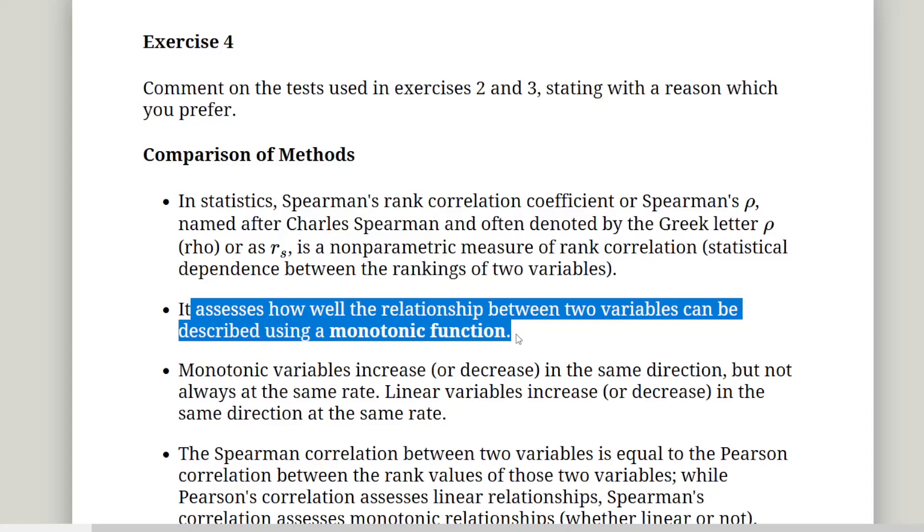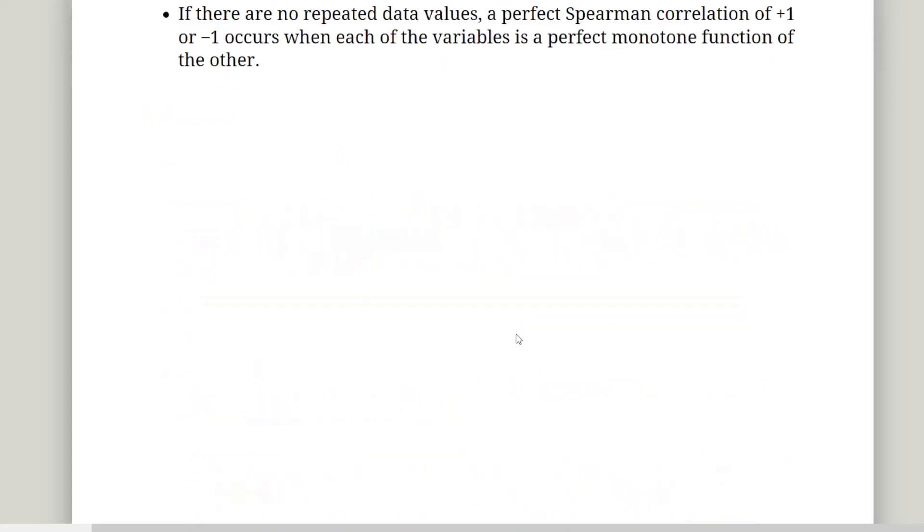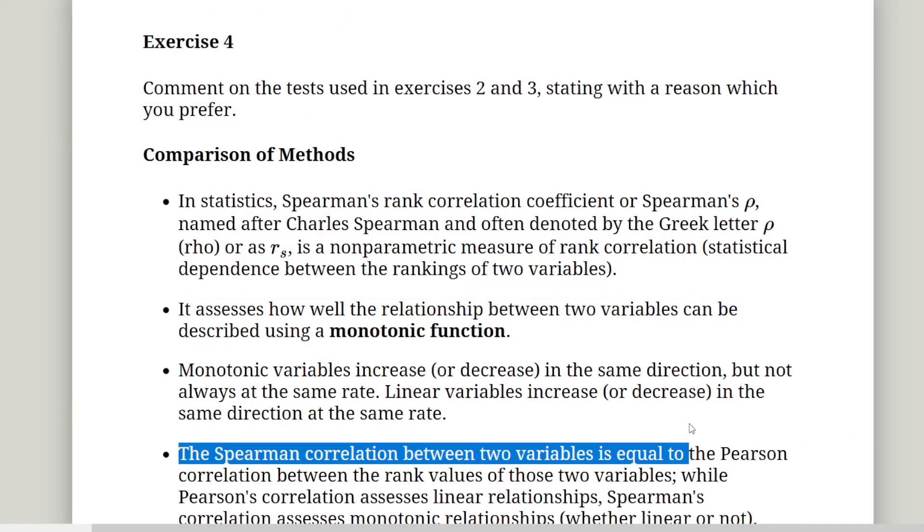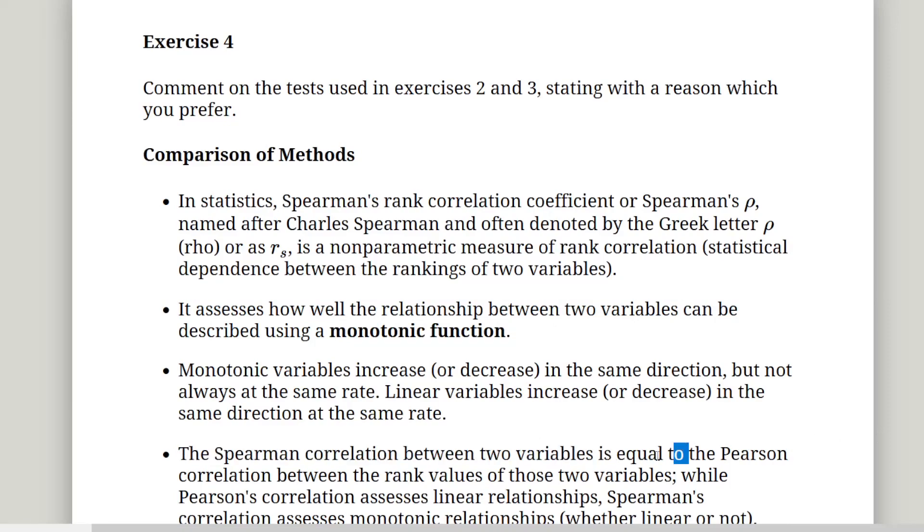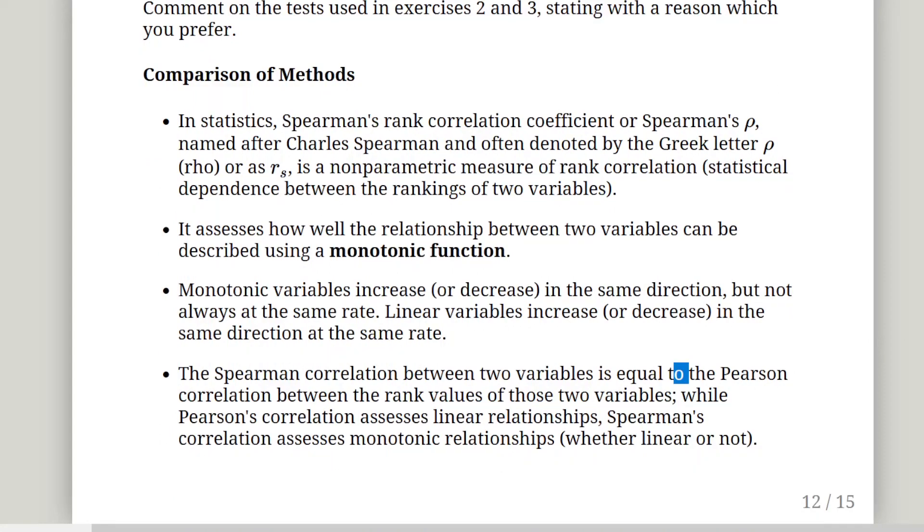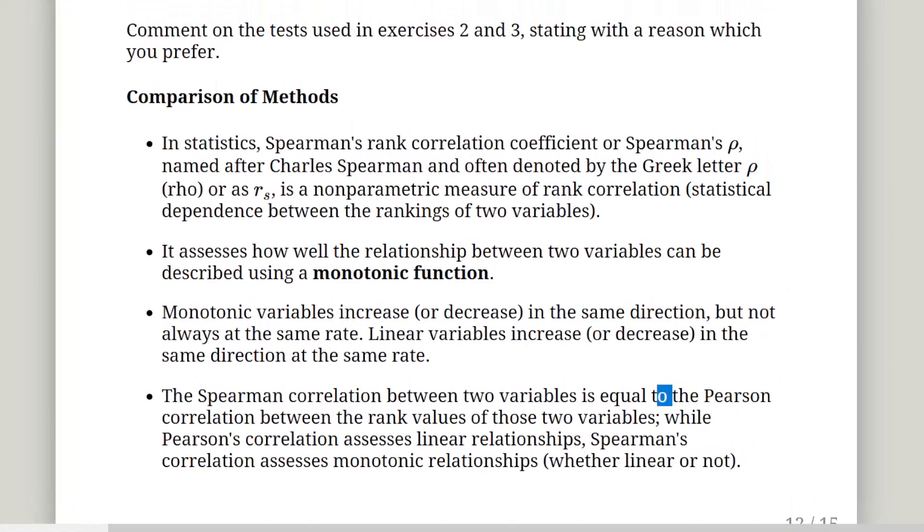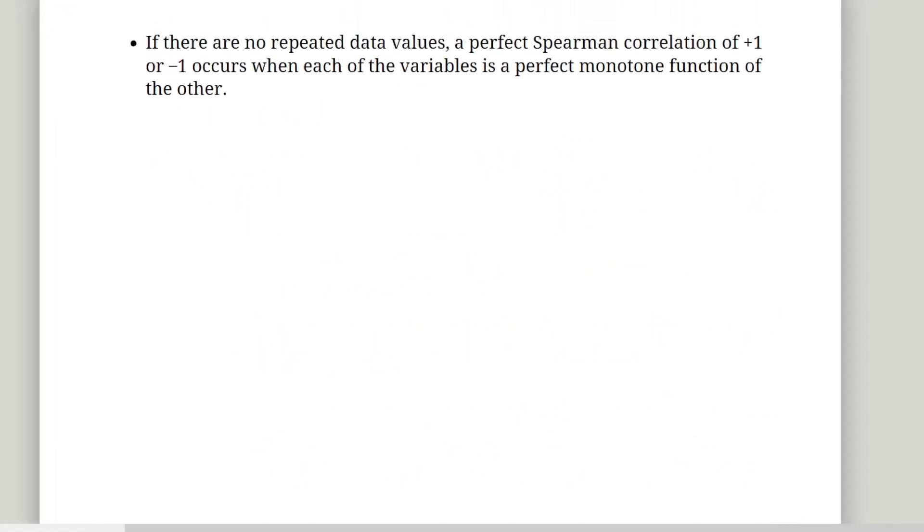That actually would be a better description of a curvilinear relationship. So monotonic variables increase or decrease in the same direction, but not always at the same rate. So it could allow curvilinear relationships. Linear relationships increase or decrease in the same direction at the same rate. So they should appear linear. Now, a linear relationship can be monotonic, but a monotonic relationship doesn't mean it's linear. So essentially, the thing is that the Pearson correlation coefficient is for linear relationships, whereas the Spearman correlation coefficient is appropriate for any monotonic relationship, whether or not they are linear. If there's no repeated data values, a perfect Spearman correlation coefficient of plus one or minus one occurs when each of the variables is a perfect monotone function of the other.